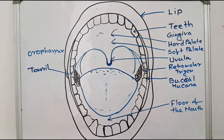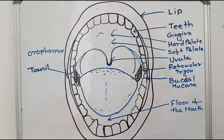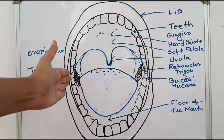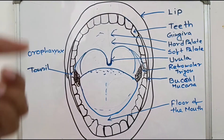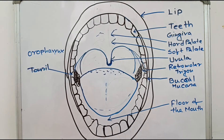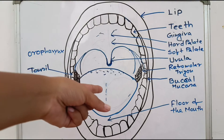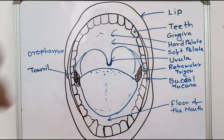Then we go to the buccal mucosa — this is a very important area. You not only inspect but also palpate the buccal mucosa. The buccal mucosa is the most prone area for squamous cell carcinoma. You have to check both sides — the left and right sides of the oral cavity properly. Check for any redness, any growth, or any color change.